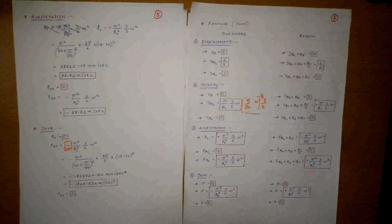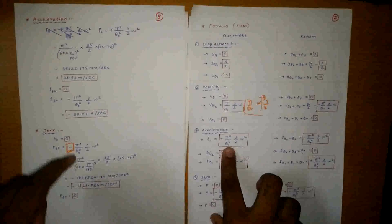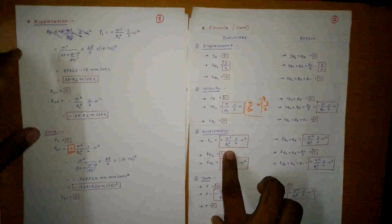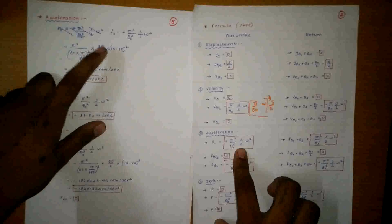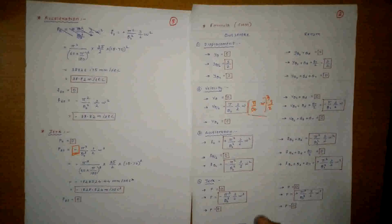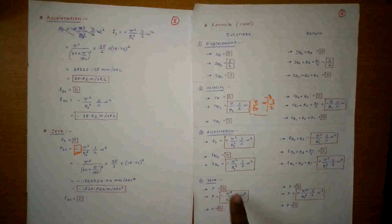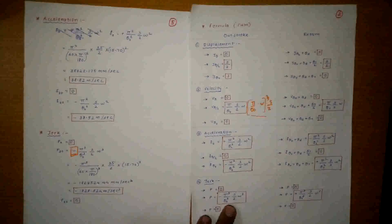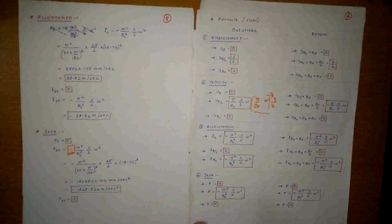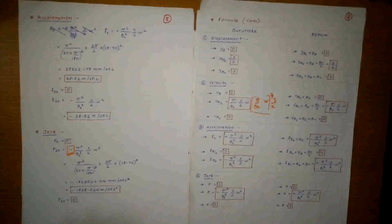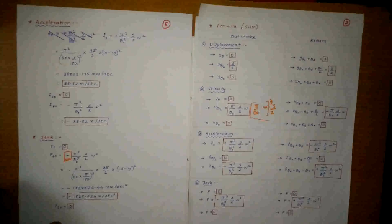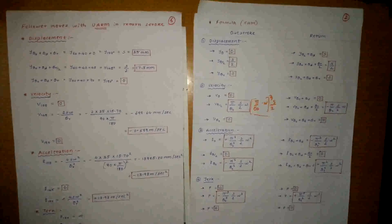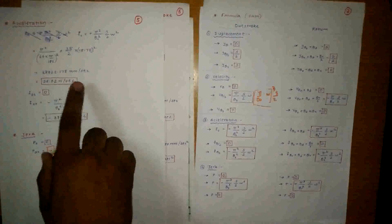For 60° the displacement value is 0 — wait, it is s = 35 mm. For acceleration it is positive (pi²/theta0²)·(s/2)·Omega² — remember theta0 is in radians, so 60×pi/180, squared. s/2 = 35/2. Just put in the values and you will get the answer. For jerk, remember first and last values are 0 and the middle has a minus sign — most people forget to write the minus sign. The jerk value is −1828.52 m/s³. Don't forget to write the units: m/s³.